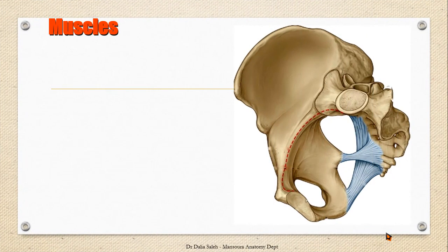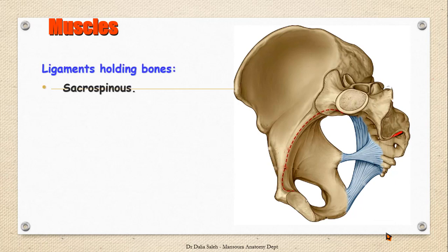Let's first recall the organization of the bony pelvis. We have two hip bones, one on each side, separated at the back by the sacrum, and these bones are held together by ligaments. The most obvious one is the sacrospinous ligament, which is triangular in shape and extends from the tip of the ischial spine to the lateral border of the lower sacrum and coccyx. We also have the sacrotuberous ligament, which lies more superficial to the sacrospinous ligament, attached to the medial border of the ischial tuberosity and extending to the lateral edges of the sacrum and coccyx.